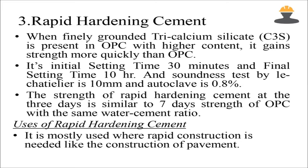Rapid hardening cement contains a higher proportion of tricalcium silicate, which gives it rapid hardening properties. It has similar properties to OPC, but achieves in 3 days the same strength that OPC achieves in 7 days.